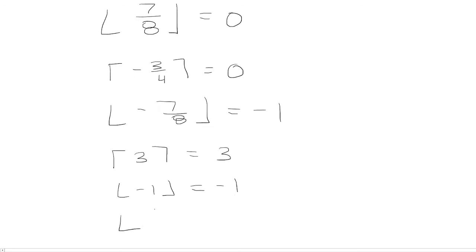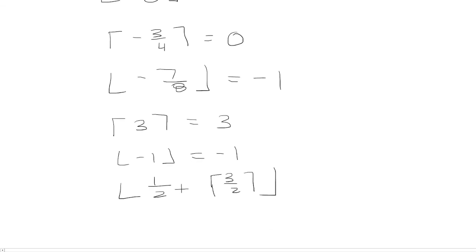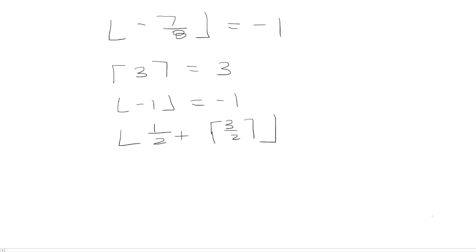Now let's look at the floor of 1/2 plus the ceiling of 3/2. The ceiling of 3/2 — well, 3/2 is 1.5, which is between 1 and 2; pick the bigger number, so that's 2. Now 1/2 plus 2 is 2.5, and this is between 2 and 3, so the floor gives 2.